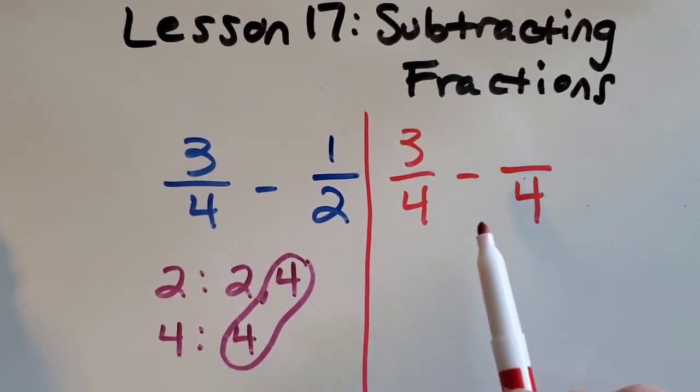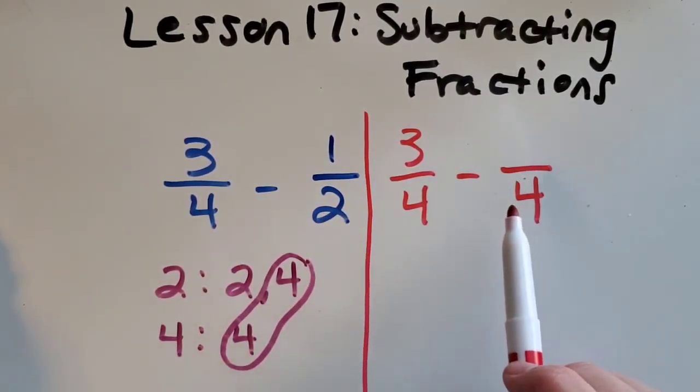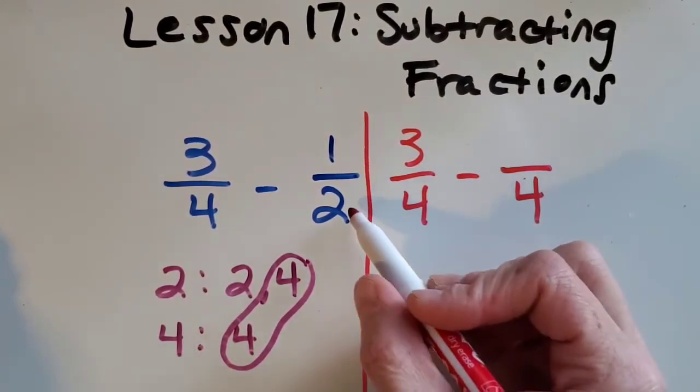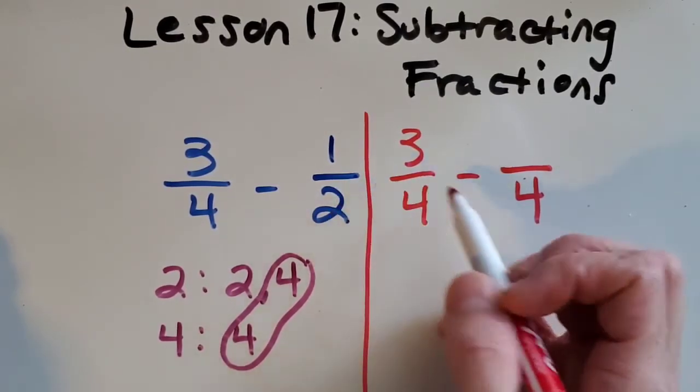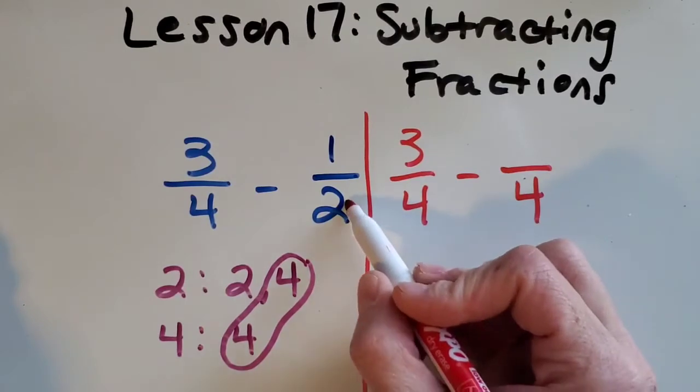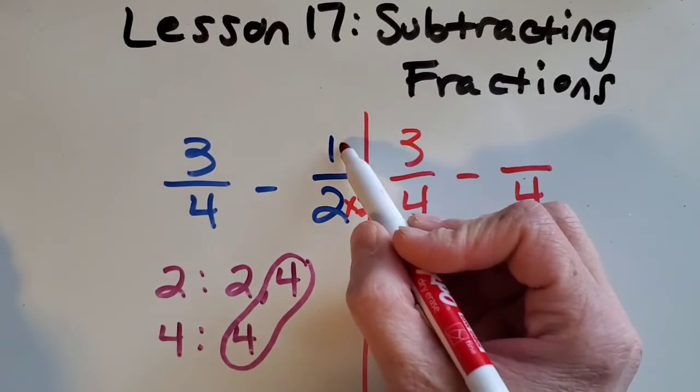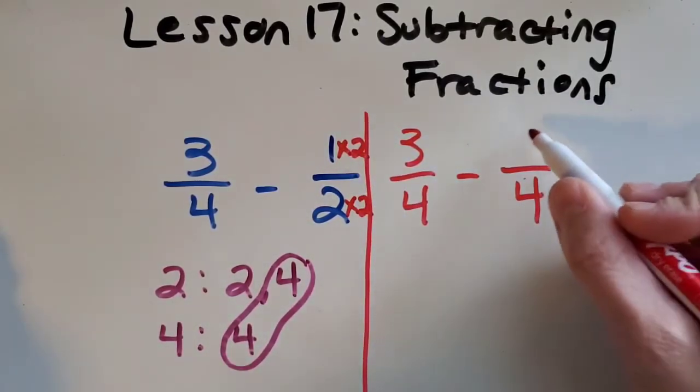So I'm going to rewrite this problem with fourths. 3 fourths got to stay the same and one half is going to be turned into an equivalent fraction with fourths. So now I just have to do the same process with adding. I think about how to get from 2 to 4 by multiplying. So 2 times 2. Good job. And then I do that to the top number. 1 times 2 which is 2.